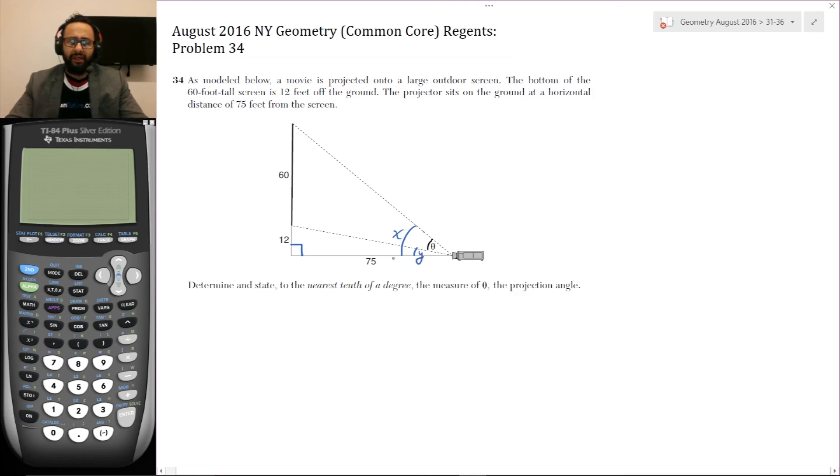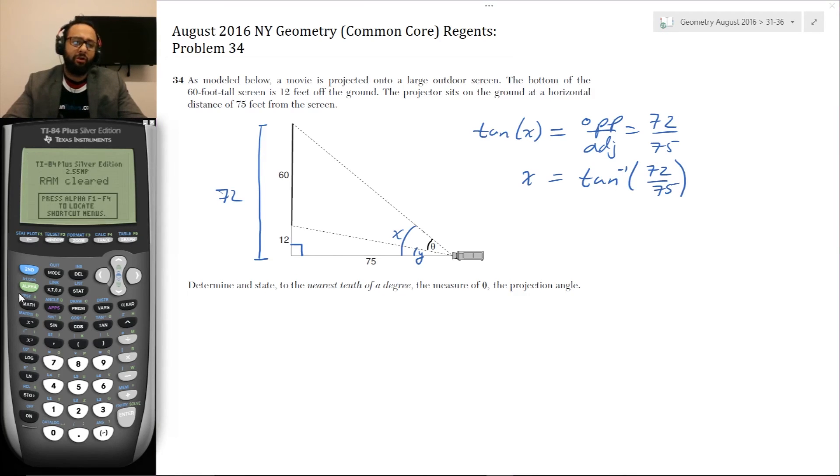So I'm going to call this angle X and I'm going to call this angle Y. Now I'm going to look at the triangle containing angle X. This right triangle is the big outside right triangle. This bottom side has length of 75 and the height of the triangle is 72. This 72 is opposite to angle X and this 75 is adjacent to angle X. So I use tangent. So tan of X is equal to opposite over adjacent, which is equal to 72 over 75.